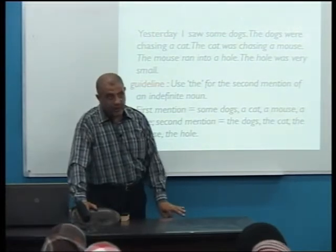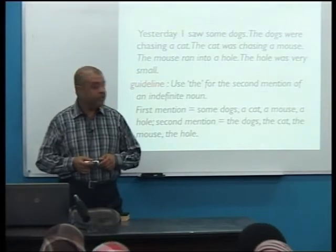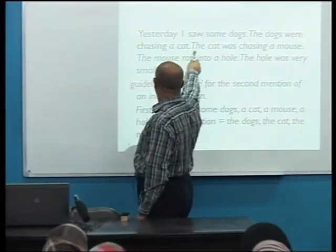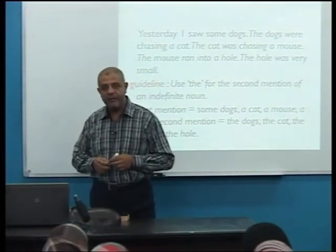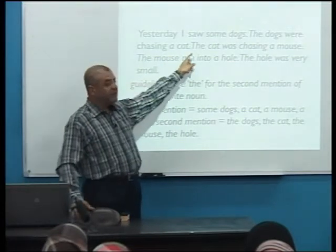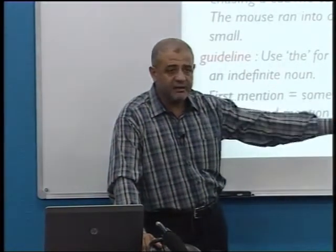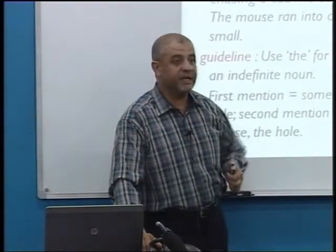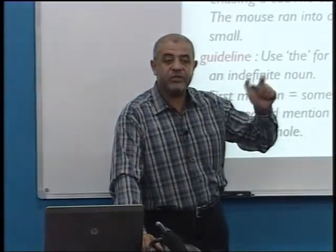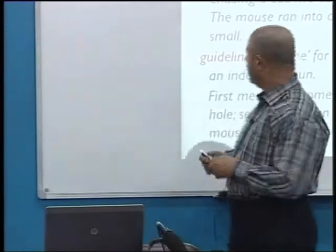The whole story follows this pattern: first mention uses the indefinite article a or an, second mention uses 'the.' But if I say 'the dogs' or 'the cat,' is this definite or generic? It is definite — we are talking about those specific dogs and that specific cat. So with definite nouns, once second-mentioned, we use 'the.'